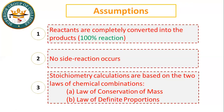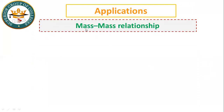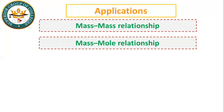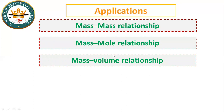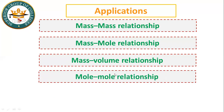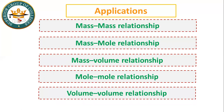Dear students, these are past paper short questions. In stoichiometric relationships: mass-mass — if we have reactant mass, product mass can be calculated. Mass-volume — if we have reactant mass, product volume can be found. Mole-mole — moles of reactant or product can be calculated from a balanced chemical equation. And volume-volume — these are all applications. If we give one quantity or parameter, we can find another.